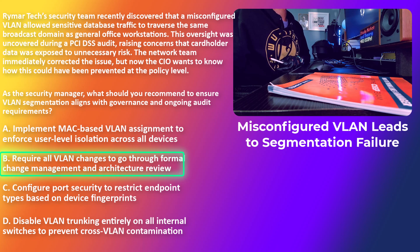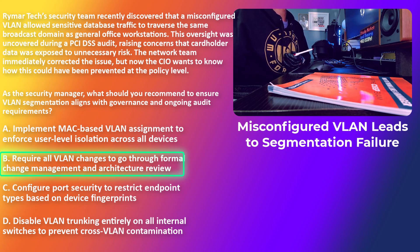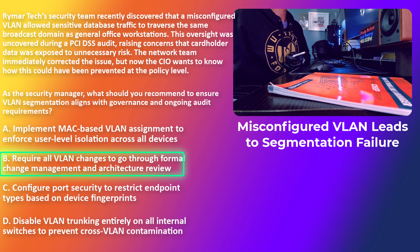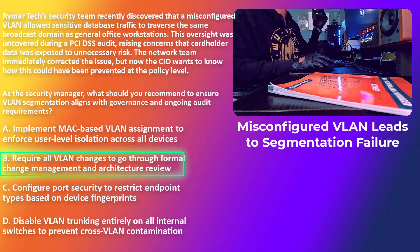The core concept of this practice question is governance over configuration. The role you're speaking to is the CIO. The right answer — Choice B — focuses on ensuring no one touches VLANs without oversight. Change control is not about bureaucracy; it's about creating a paper trail, documentation, and accountability — an audit path. PCI DSS requires traceability and a chain of accountability, and this is how security proves itself in the boardroom. The goal is not to stop mistakes, but to stop unverified changes. Security misconfigurations will happen, but how you govern them decides whether you're managing risk or letting it manage you.